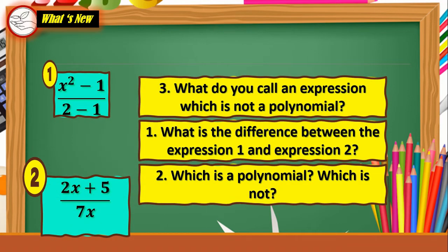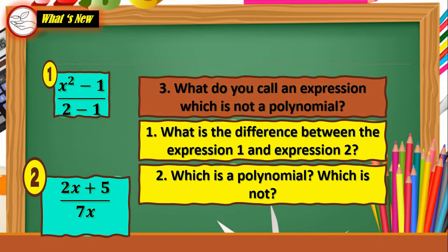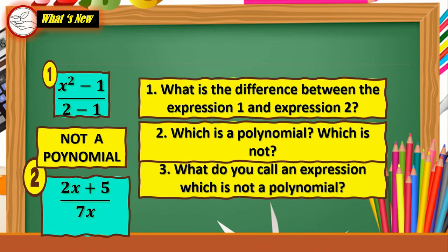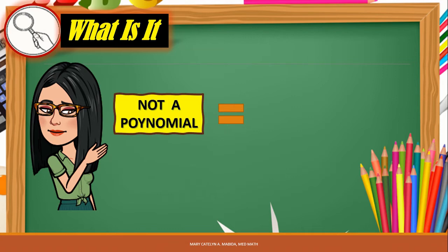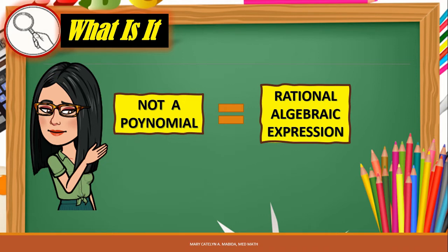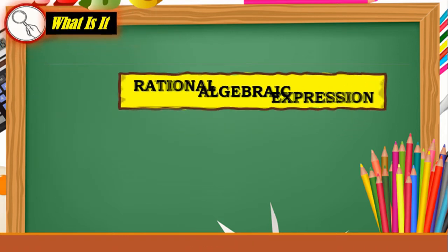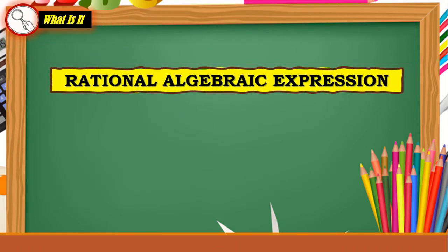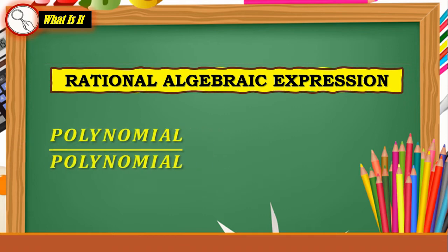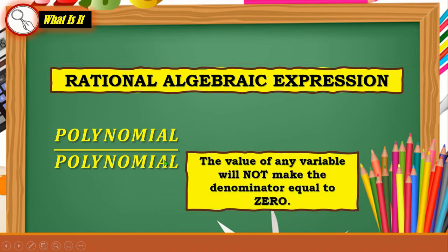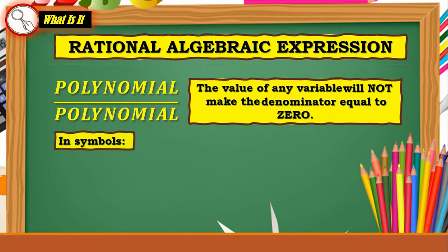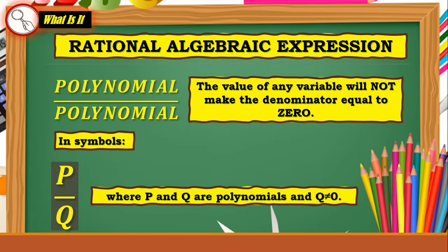So, what do you call an expression which is not a polynomial? A rational algebraic expression! A rational algebraic expression is a fraction in which the numerator and the denominator are polynomials, and the value of any variable will not make the denominator equal to 0. In symbols, we have P over Q, where P and Q are polynomials and Q is not equal to 0.